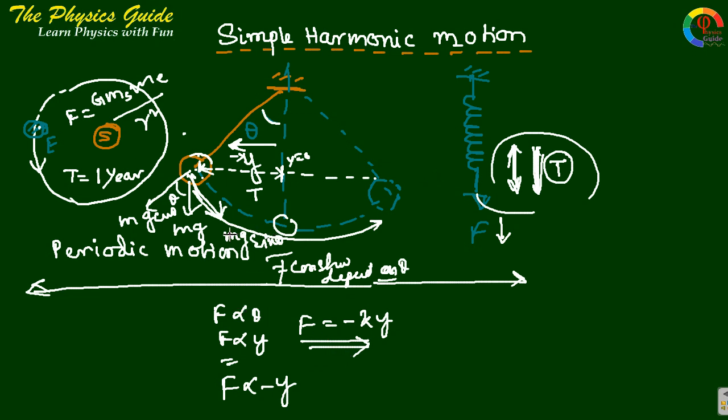But for the first example, there is no such thing - force is always constant. So this is not simple harmonic oscillation, only periodic motion.